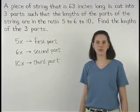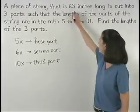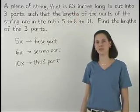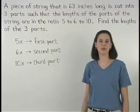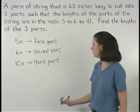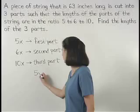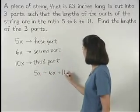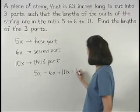Since we know that the original piece of string was 63 inches long, our three parts must add to 63 inches. So we can set up the equation 5x plus 6x plus 10x equals 63.